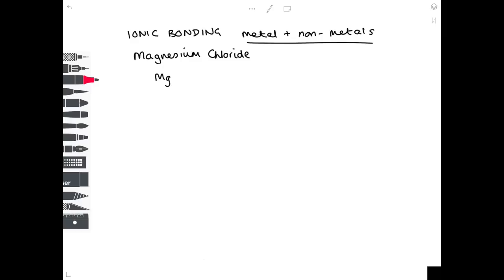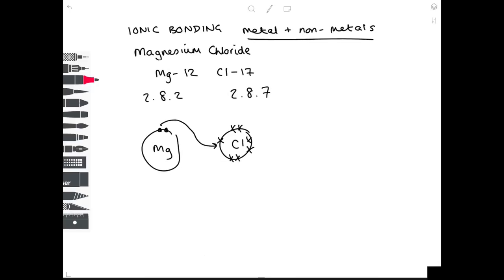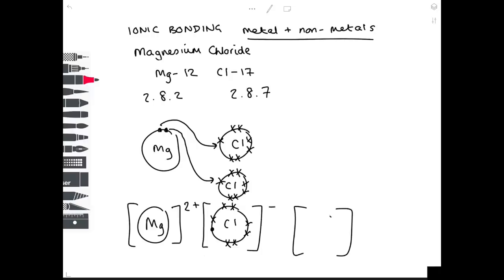For magnesium chloride: magnesium (atomic number 12) and chlorine (atomic number 17). Magnesium has 2 outer electrons; chlorine has 7 in its outer shell. The first electron from magnesium goes to one chlorine, but there's still a second electron — so a second chlorine atom is needed. In the final diagram, Mg is drawn as 2+ and each Cl as 1−, giving the formula MgCl₂.